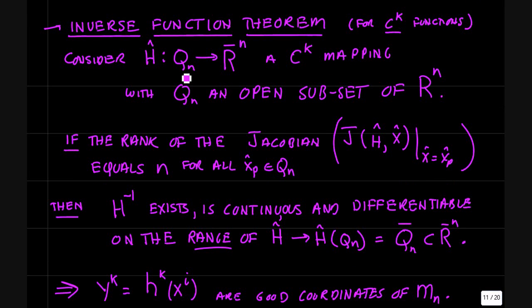Okay. Inverse function theorem for C^k functions. Consider a function h that maps Q^n to R^n bar and the function h is a C^k mapping and Q^n is an open subset of R^n. If h is invertible, namely if the rank of the Jacobian J of h on x at x equals x_p, if the rank of this Jacobian is equal to n for all x_p and Q^n, then h inverse exists and is continuous and differentiable on the range of h of Q^n to Q^n bar in R^n bar.